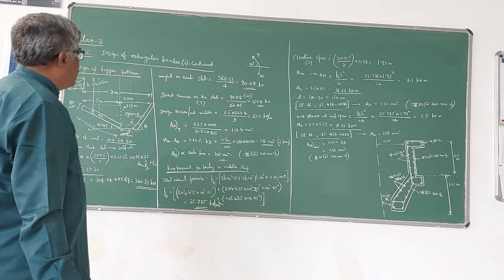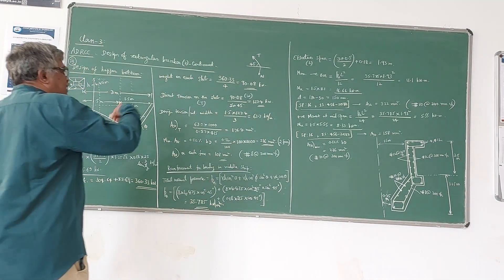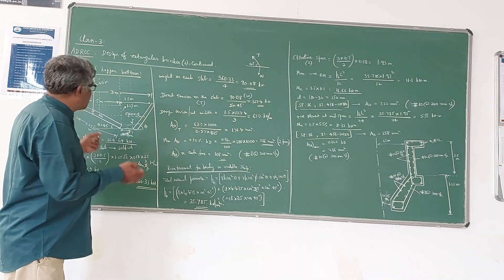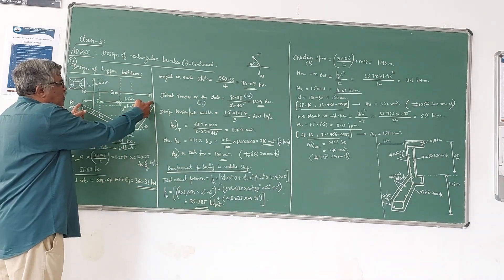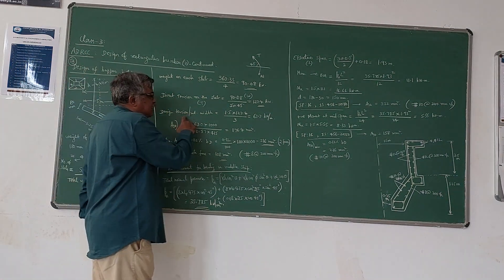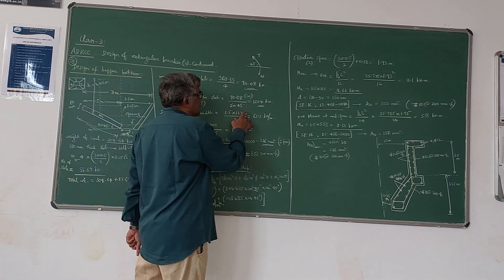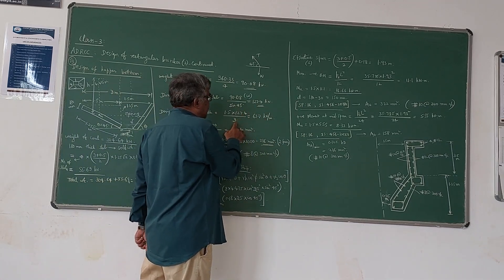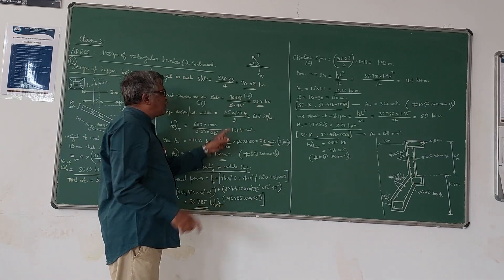Per meter width, since the total width is 3 meters, this tension force is divided by 3. A partial safety factor of 1.5 is also applied for the design.